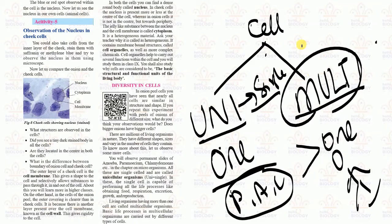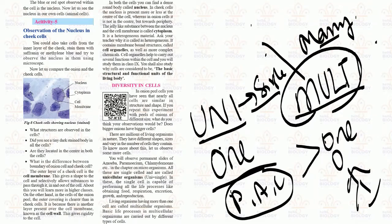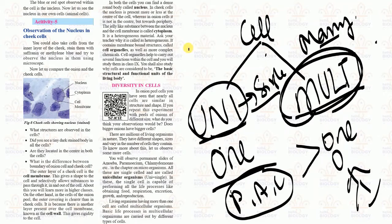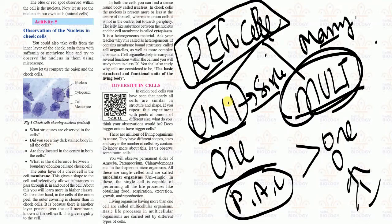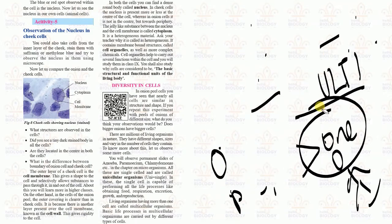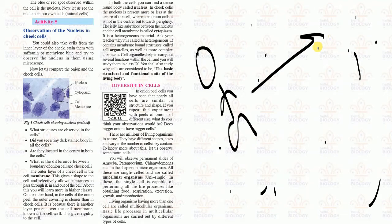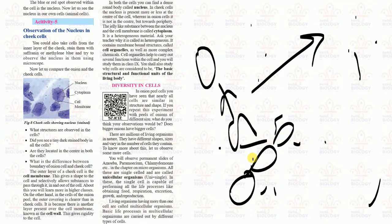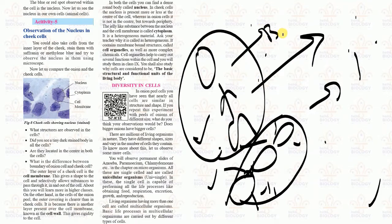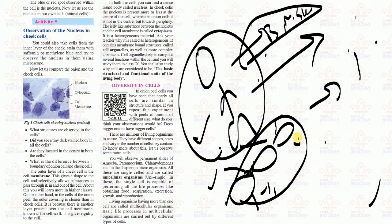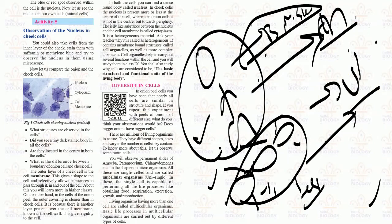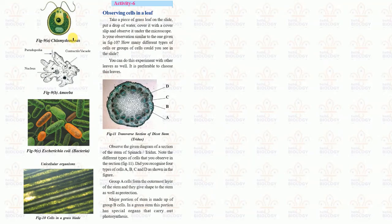Uni means single and multi means many in Greek. In both unicellular and multicellular organisms, life functions such as respiration, excretion, growth, and reproduction are maintained. For example, both humans and ants can move from one place to another, even though their cells differ. In multicellular organisms, specialized cells like bone cells, muscle cells, and skin cells each help with specific functions.